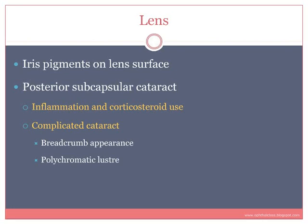The most important complication occurring in the lens is the posterior subcapsular cataract. The cause of cataract in uveitis is two-fold: one is inflammation itself, and the second is the use of corticosteroids. Corticosteroids are the mainstay of treatment of uveitis and can result in two complications — cataract and glaucoma — which are also complications of uveitis per se.